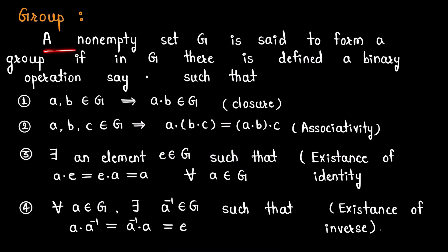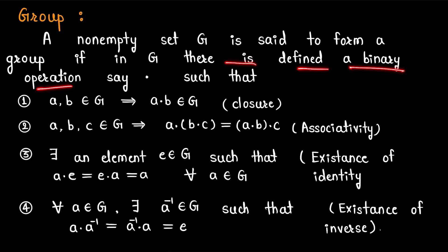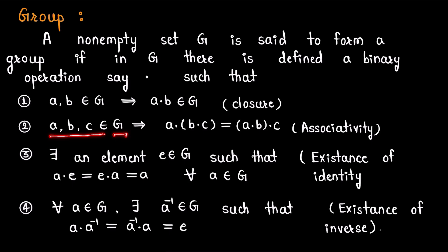A non-empty set G is said to form a group if in G there is defined a binary operation, say dot, such that: number 1, for any two elements a, b in G, a dot b is again in G — we call this property the closure property. Number 2, for any three elements a, b, c in G, we have (a dot b) dot c is the same as a dot (b dot c) — we call this property associativity.